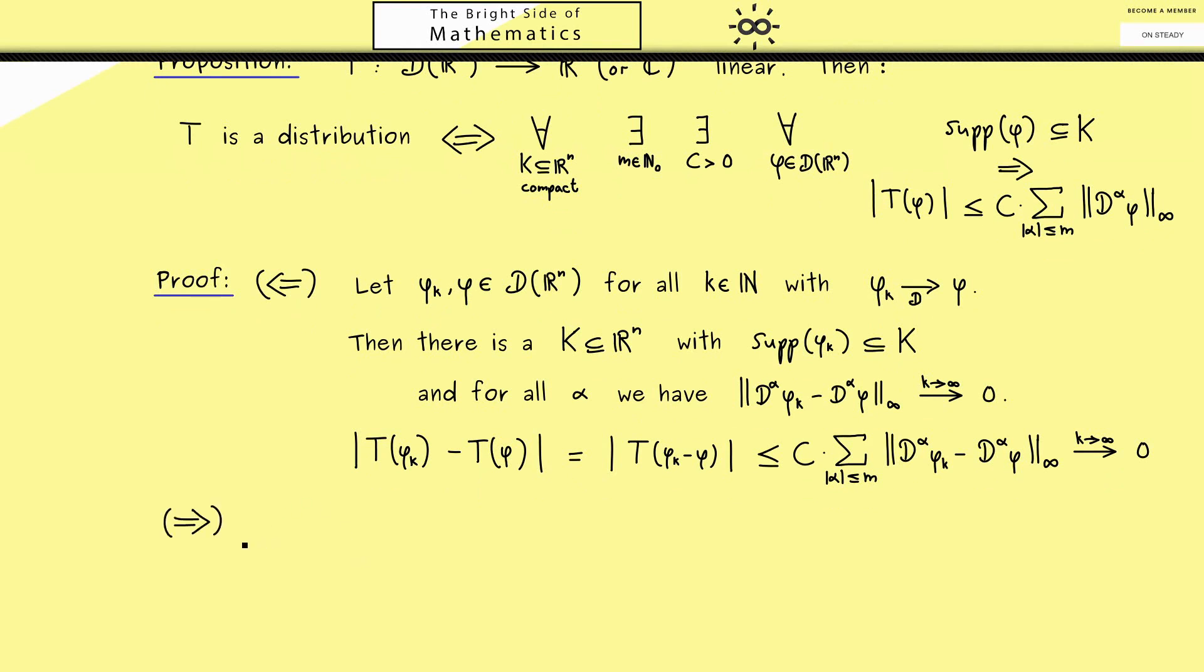Here I want to do a proof by contraposition. So we start with the negation of the right hand side. This means that we just have to exchange the quantifiers. So here we have there exists a compact set such that for all m and all c there exists a test function phi. And the negation of the implication is just that the support is still in k, but the inequality goes the other way around. This means that we have a greater sign here.